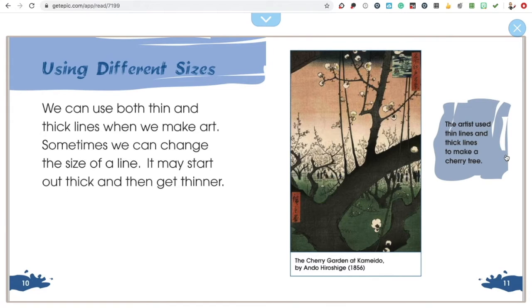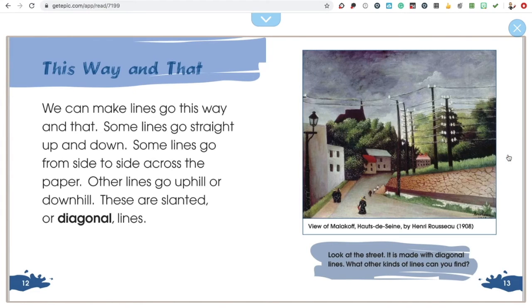We can use both thin and thick lines when we make art. Sometimes we can change the size of a line. It may start out thick and then get thinner. We can make lines go this way and that. Some lines go straight up and down. Some lines go from side to side across the paper. Other lines go uphill or downhill. These are slanted or diagonal lines.